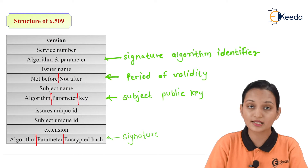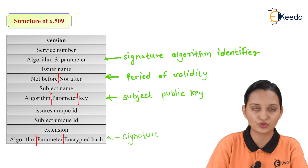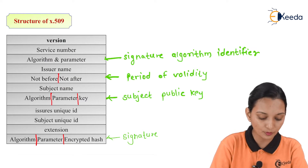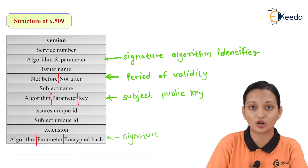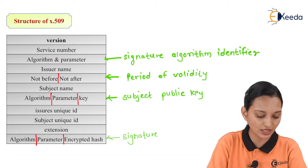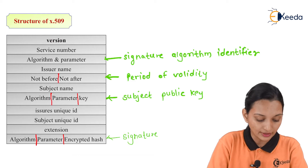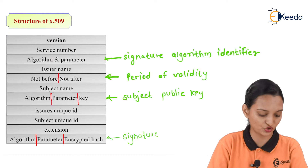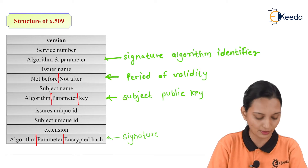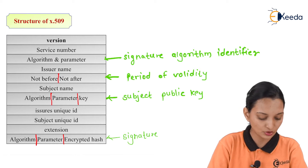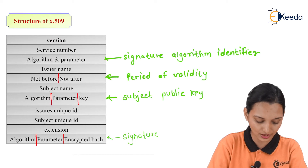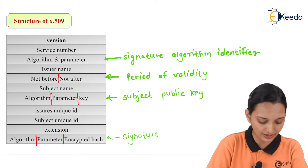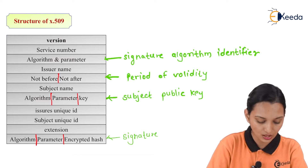This is the basic structure of X.509. You can verify it with the help of a few parameters that are used to design the process. Here there are some parameters such as: version, serial number, algorithm and parameter, issuer name, not before, not after, subject name, algorithm parameter key, issuer's unique ID, subject unique ID, extension, and algorithm parameter encrypted hash.